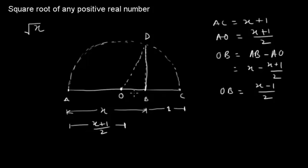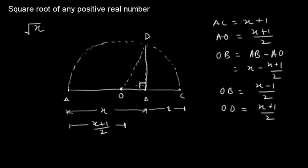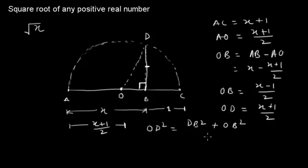Now we have this length OB = (x - 1) / 2, and we also have OD, which is equal to the radius of the circle, which is (x + 1) / 2. Using the Pythagorean theorem we can find out this side DB. The Pythagorean theorem states: OD² = DB² + OB².